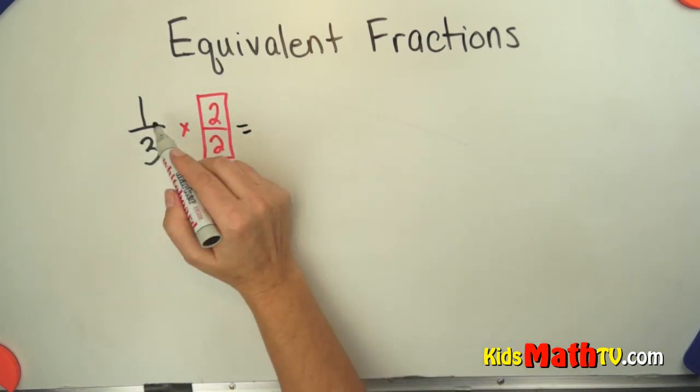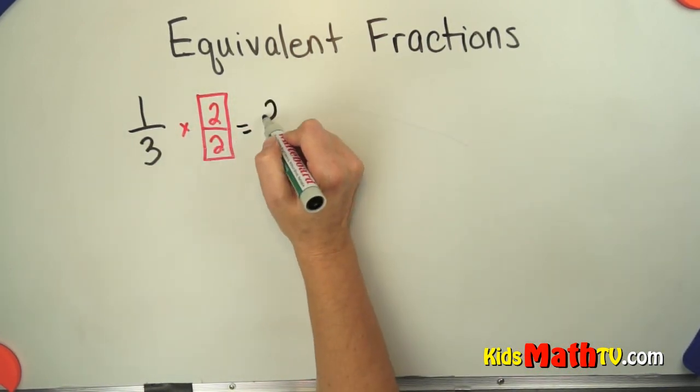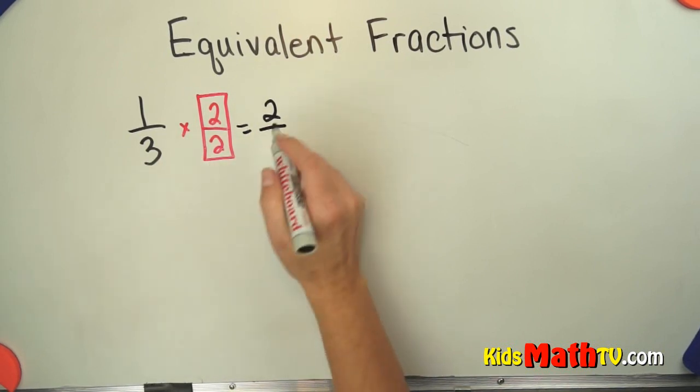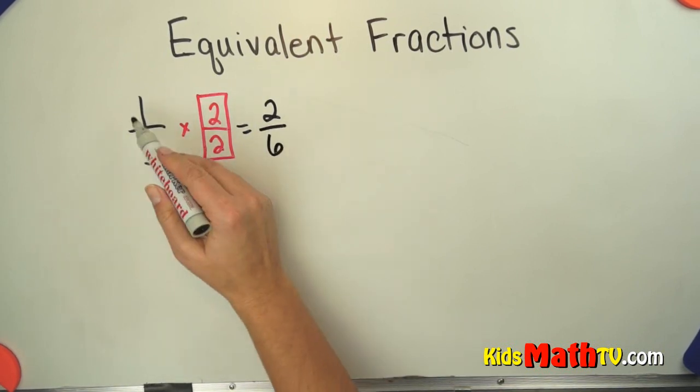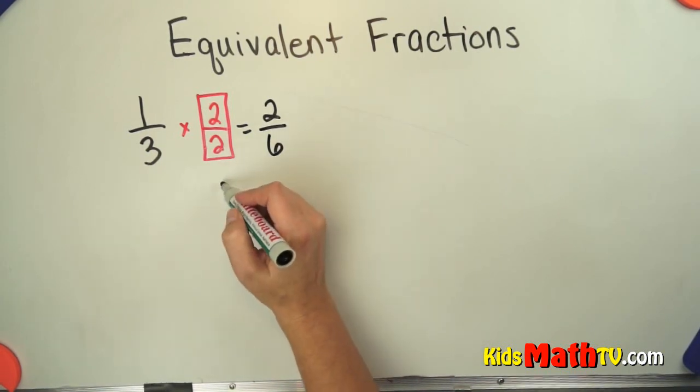So if we multiply 1 times 2 we get 2. And 3 times 2 is 6. So 1 third is the same as 2 sixths.